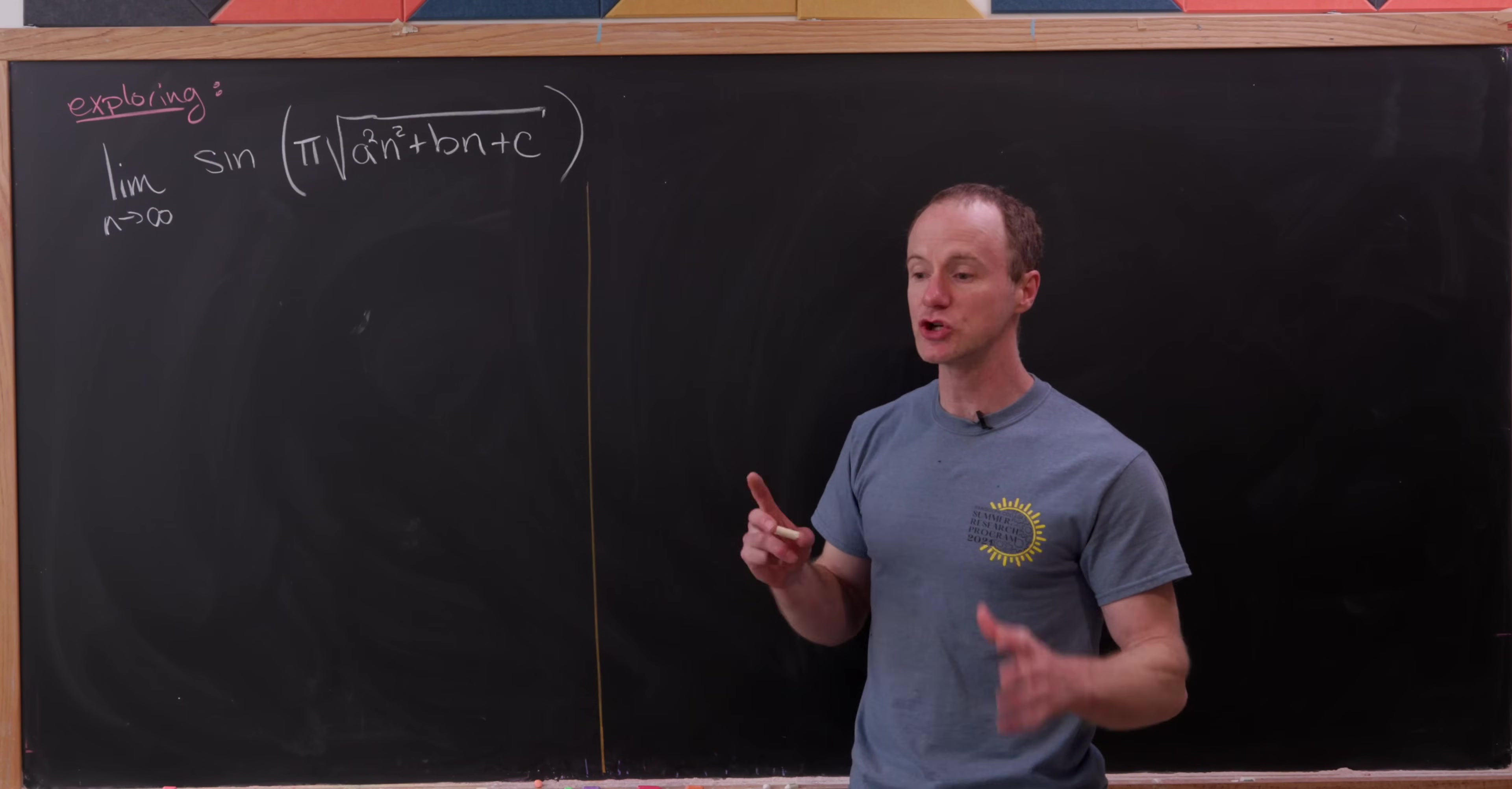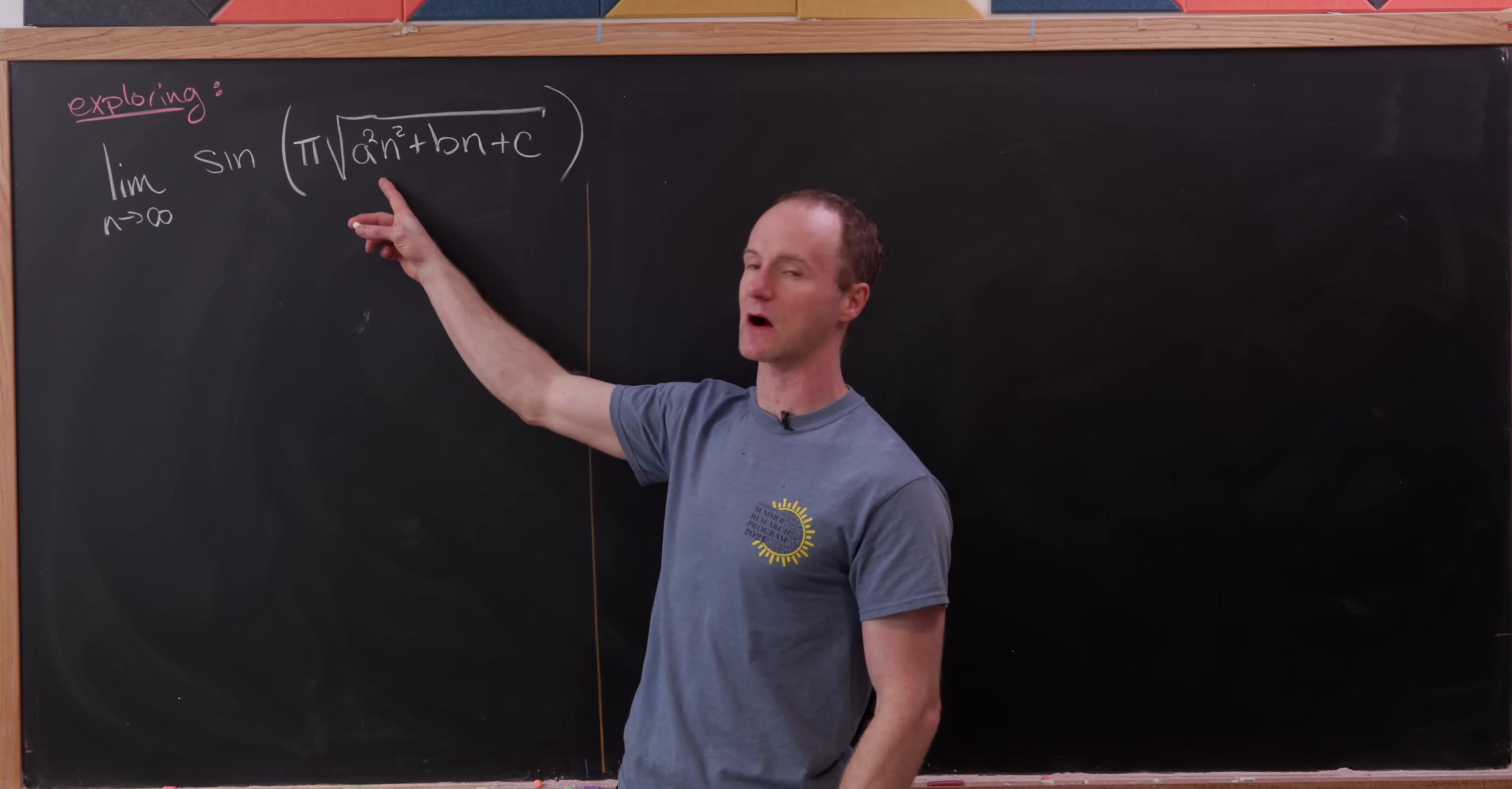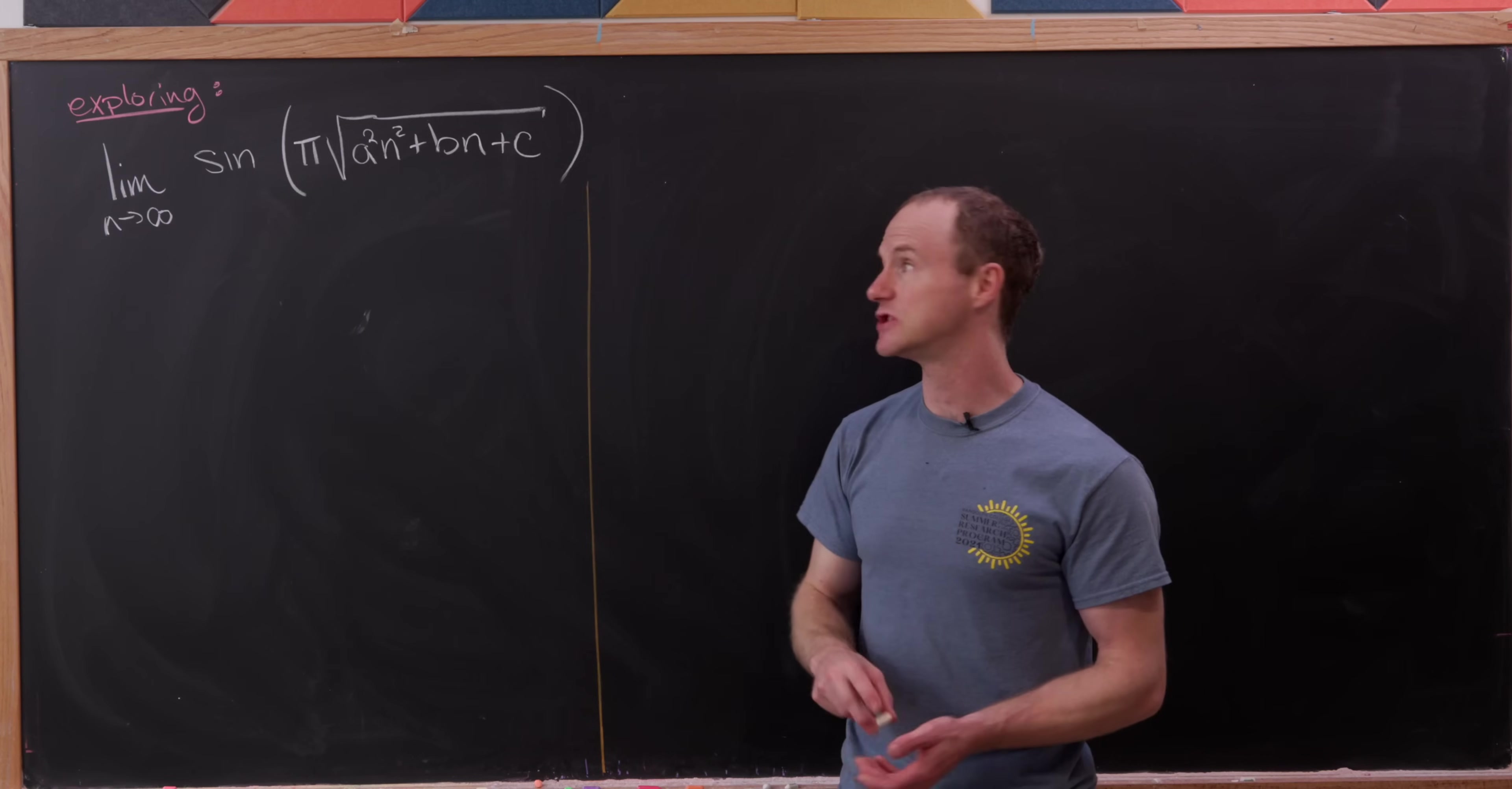An intuitive way to think about this is as n gets larger and larger, this seems to look like π times a times n. That's because this quadratic in here for large powers of n is dominated by the a²n² term. And then of course the square and the square root cancel each other. But we want to do some sort of proper calculation that will be in line with that intuition.